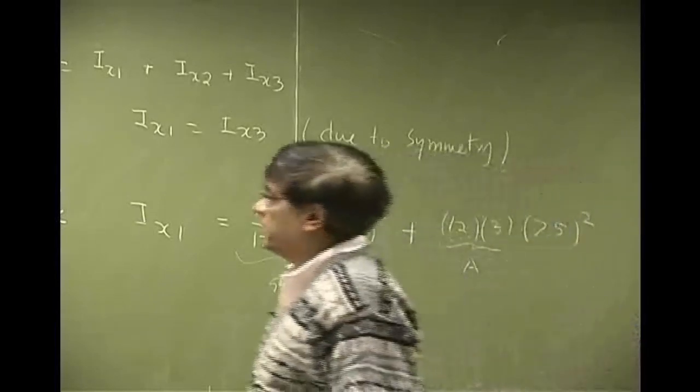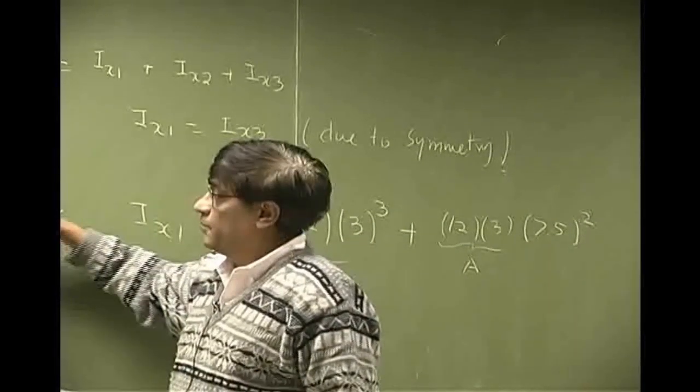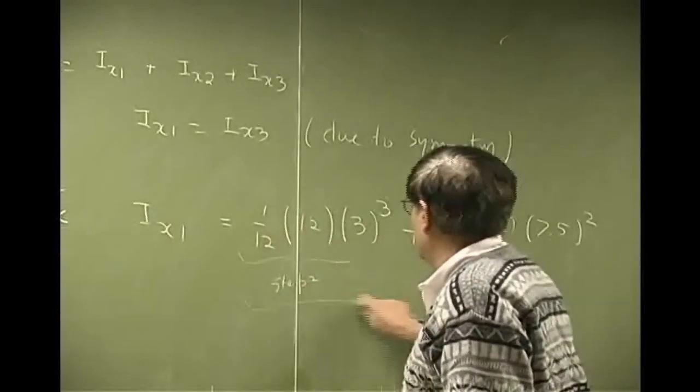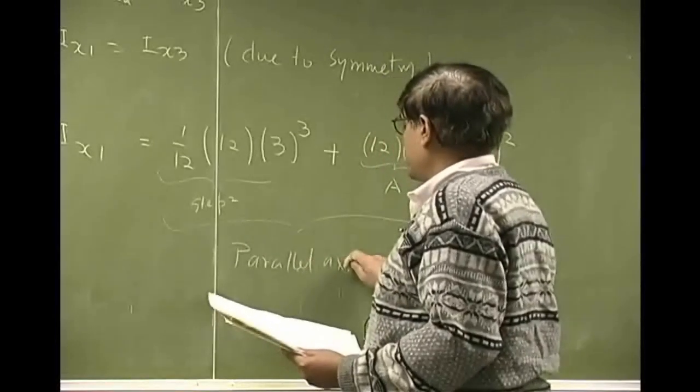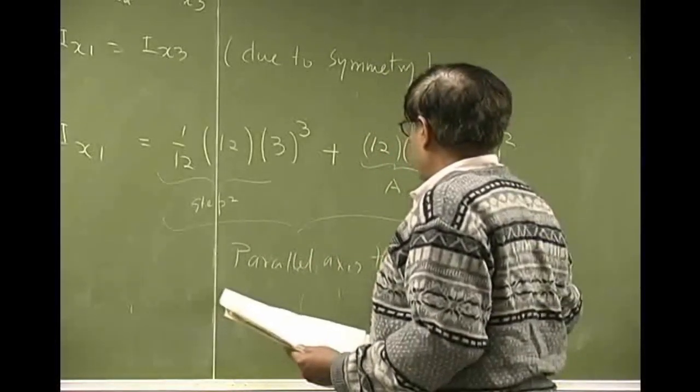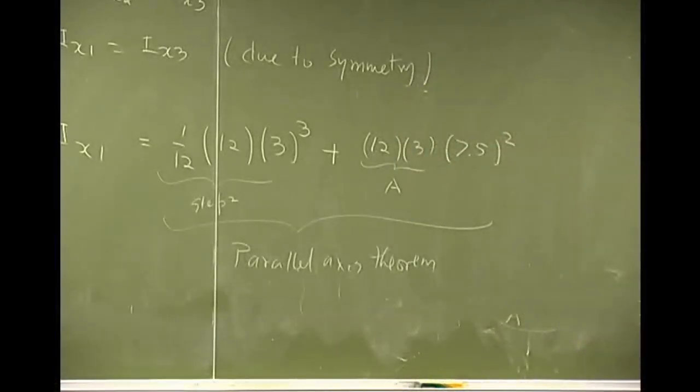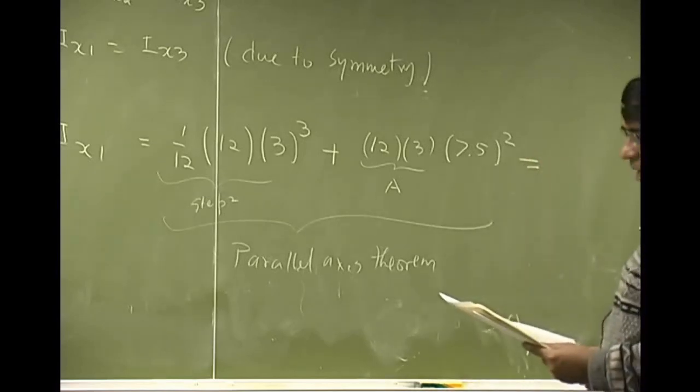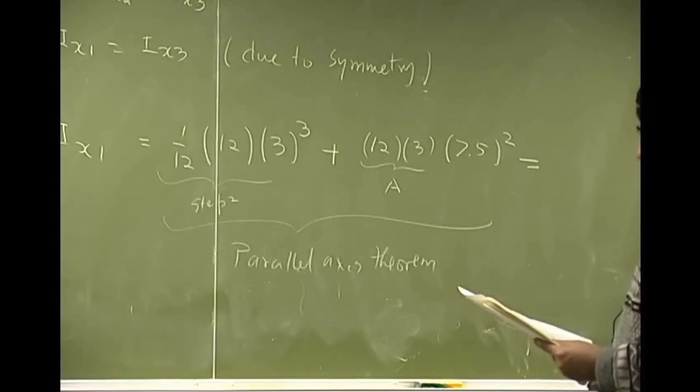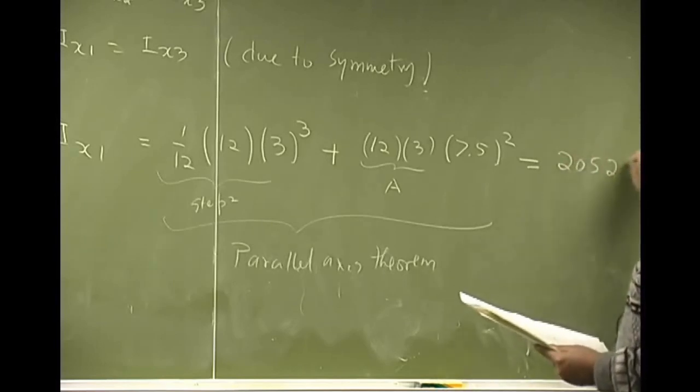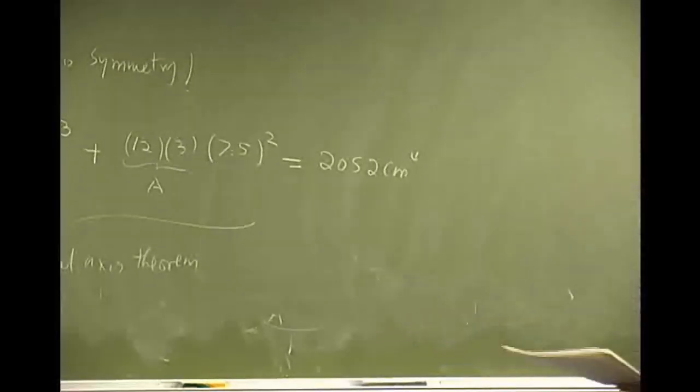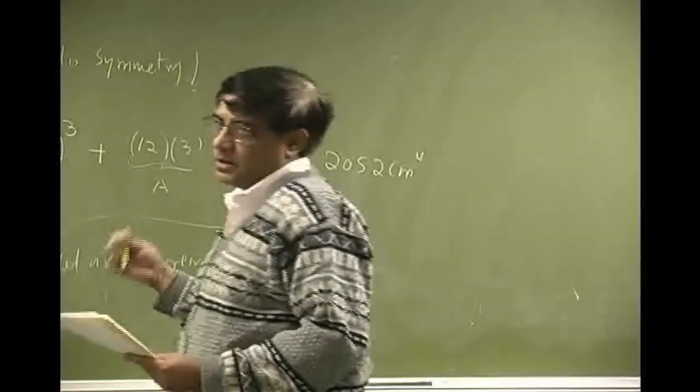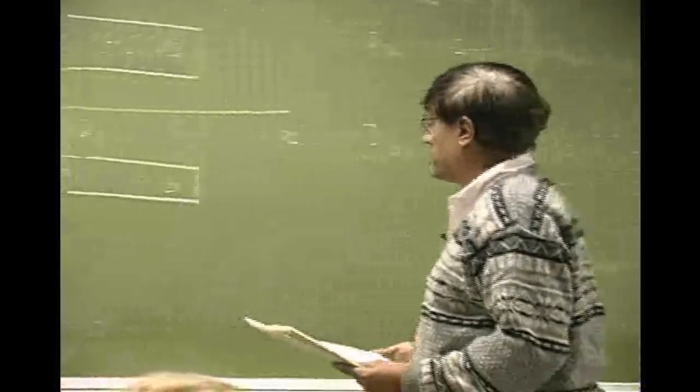Then, since that is not what you need, you need the inertia of this about this. So you do step 2 and you use parallel axis theorem. So it is a two-step process and if you do go through this, your numbers should come out to be 2052 centimeters to the power of 4. That is the same as Ix3. You could try the same thing for Ix3. It will come out to be the same.